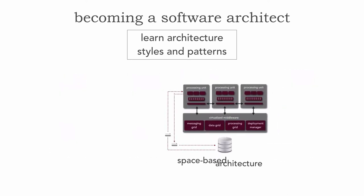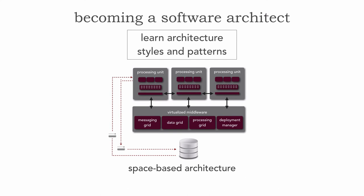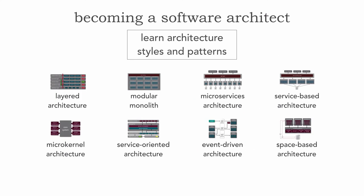Finally, the last architecture style is space-based architecture — a very unique style that basically removes the database from the equation for transactional processing and relies solely on in-memory caching as part of the normal transactional processing of the system. This is the architecture style where you achieve the highest levels of elasticity, scalability, and performance out of any given system. These are eight core architecture styles — there are others like pipeline or hexagonal architecture, but these fit the majority — I'd say 90% — of all applications out there.